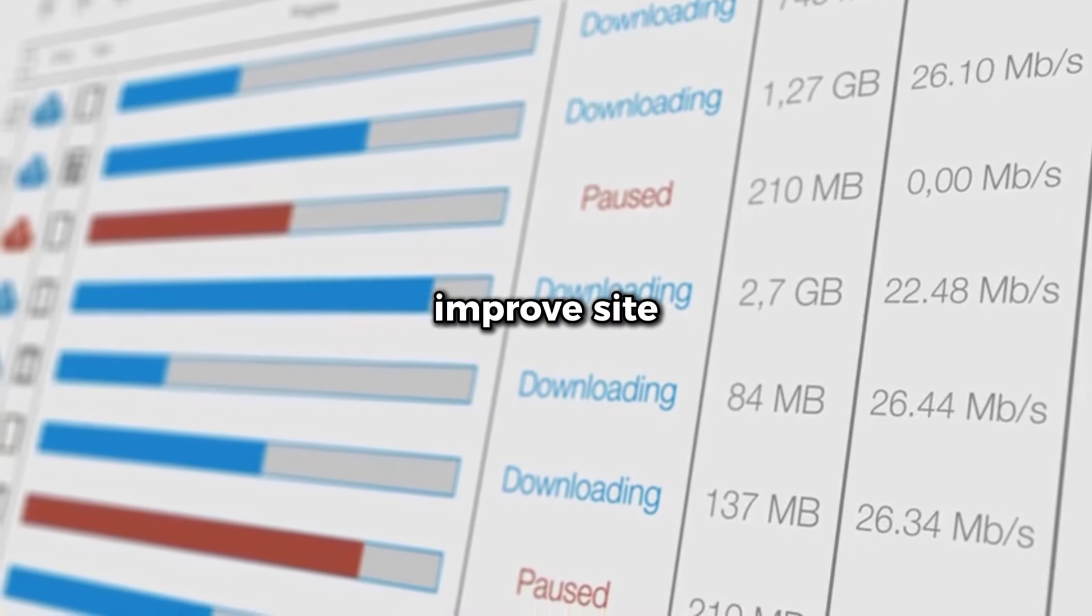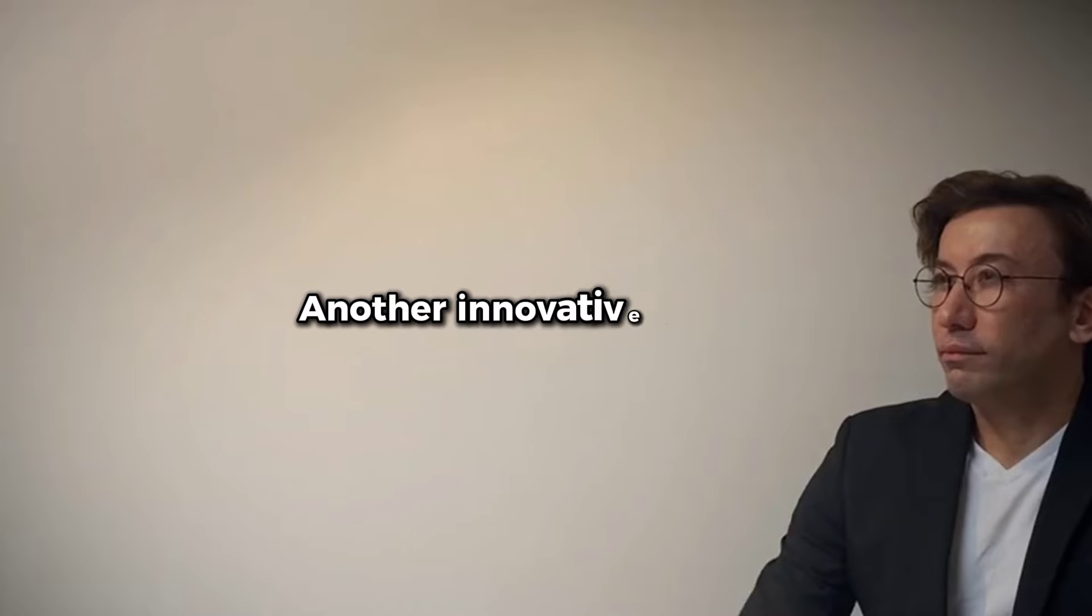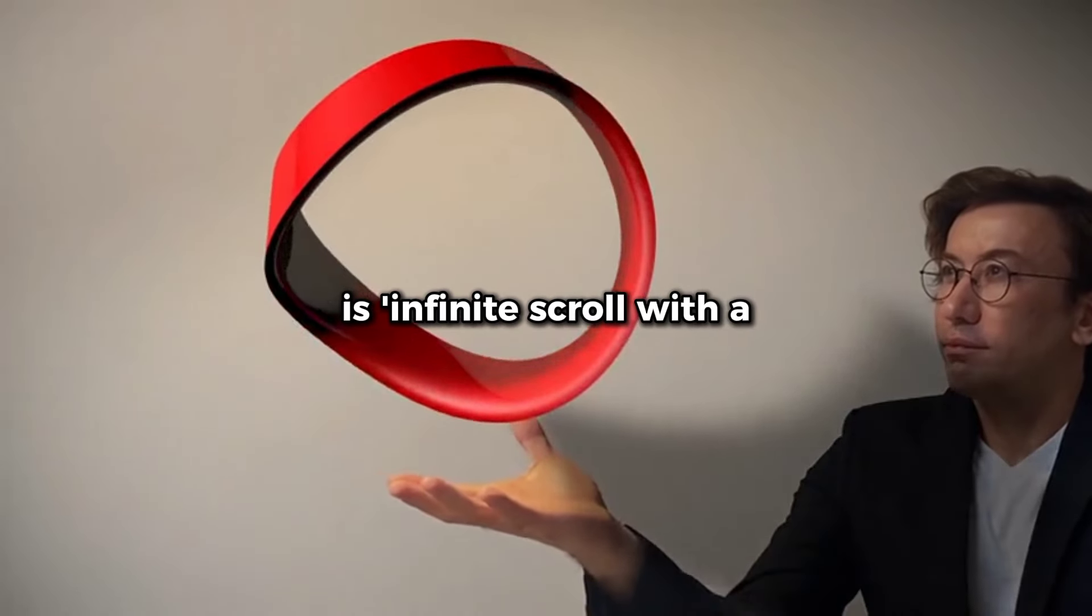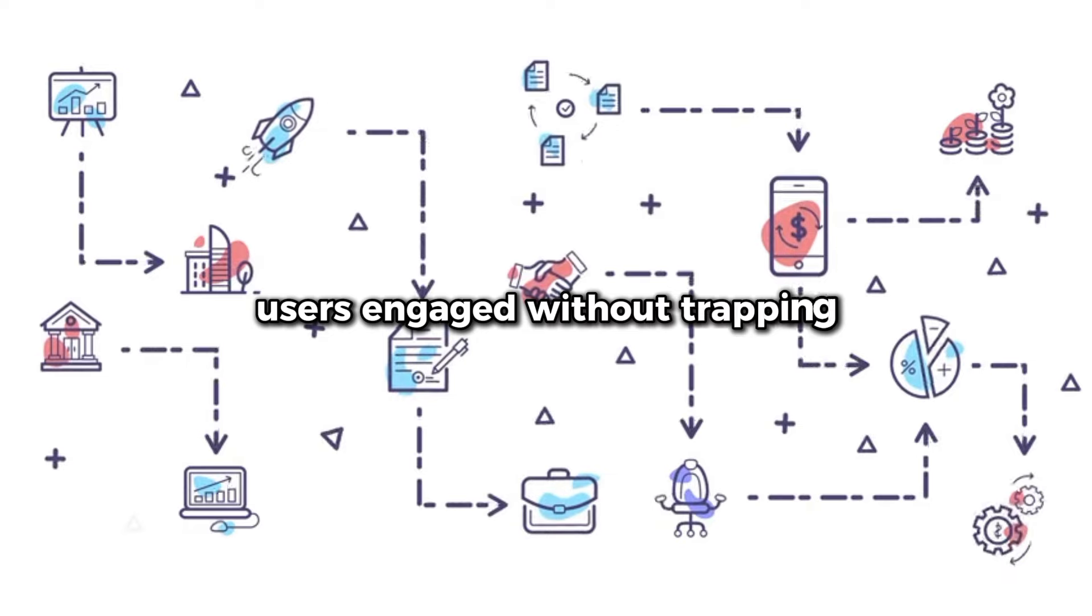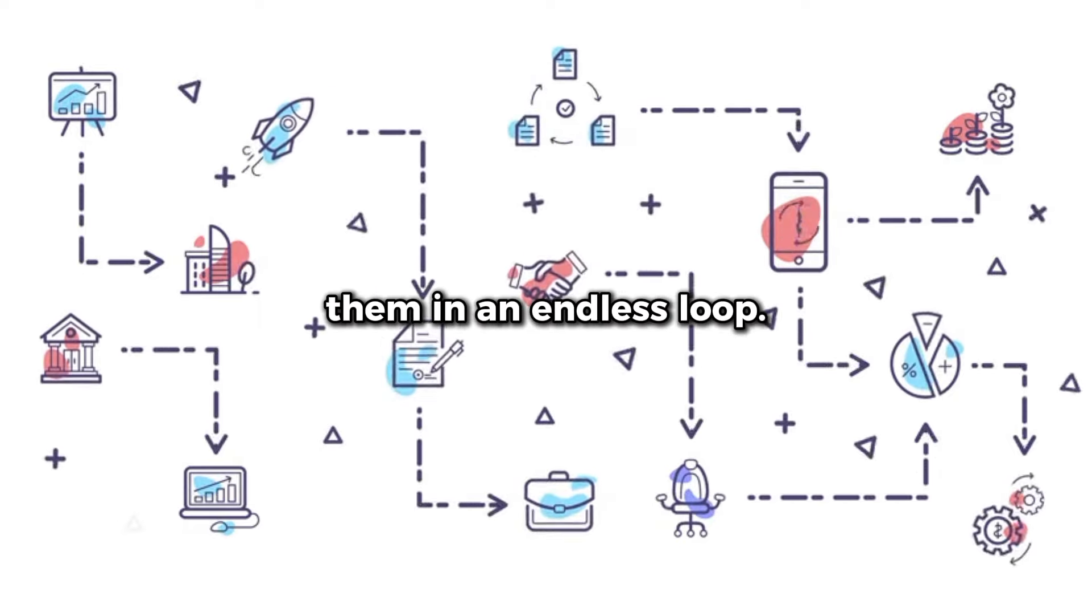Another innovative approach is infinite scroll with a twist, which combines the best of both worlds. This method offers continuous loading of content, but includes periodic stopping points, where users can decide to continue or take a break. It's a balanced way to keep users engaged without trapping them in an endless loop.